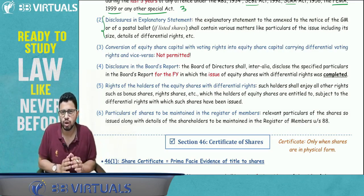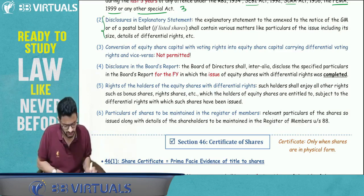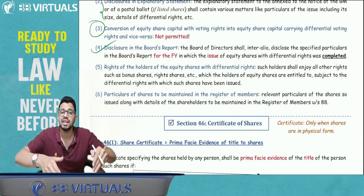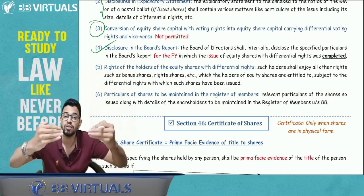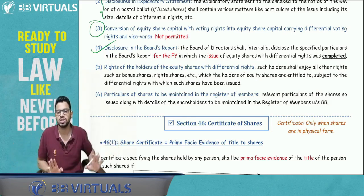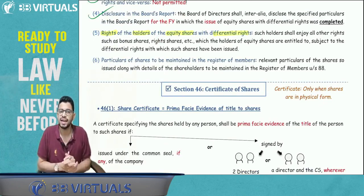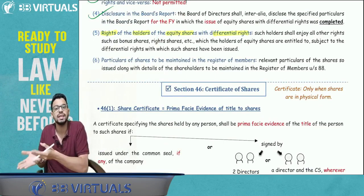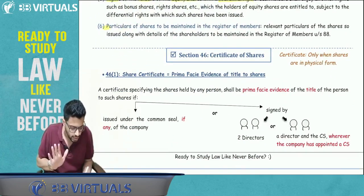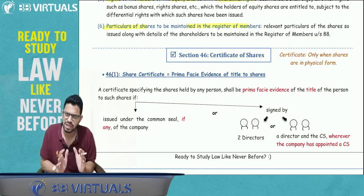No conversion is allowed — you cannot convert normal equity shares with voting rights into differential rights shares or vice versa. Whatever is issued remains as issued. In the board report under Section 134 for the financial year in which you issue these equity shares with differential rights, you must give full disclosure of how the shares were issued. The holders of equity shares with differential rights have the same rights as normal equity shareholders, just with certain differential rights as per the terms of issue. Their particulars must be maintained in the register of members under Section 88.